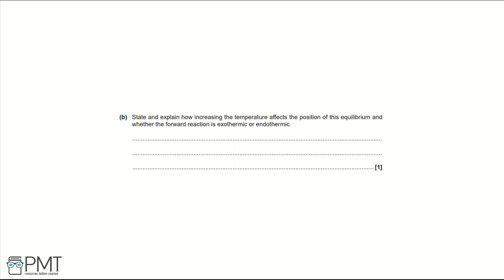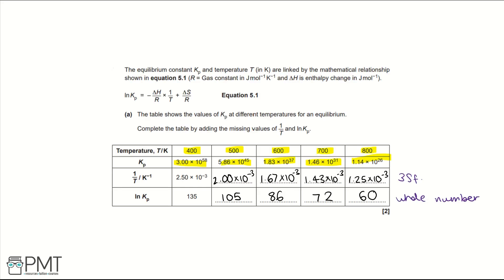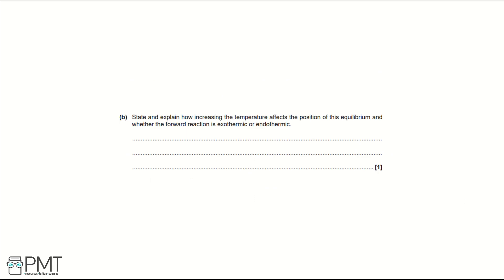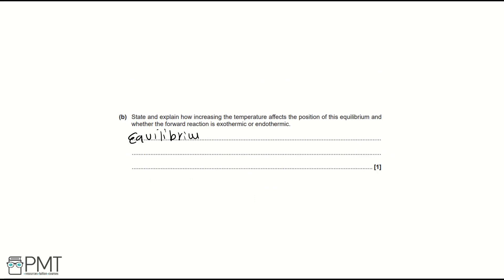Part B. State and explain how increasing the temperature affects the position of this equilibrium and whether the forward reaction is exo or endothermic. Looking at the table, as temperature increases, Kp is decreasing. The general expression for Kp is the partial pressure of products divided by the partial pressure of reactants. If Kp is decreasing, the denominator is bigger, meaning the equilibrium position has shifted to favour the reactants — that is, shifted to the left.